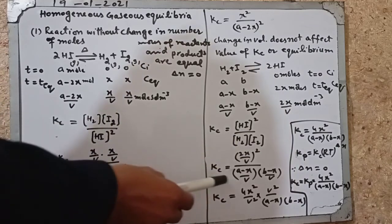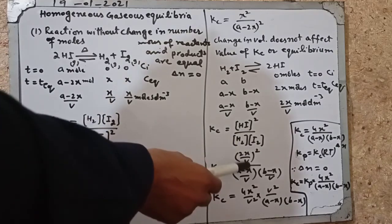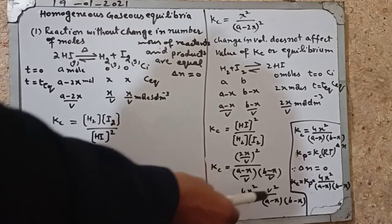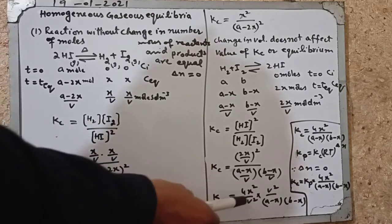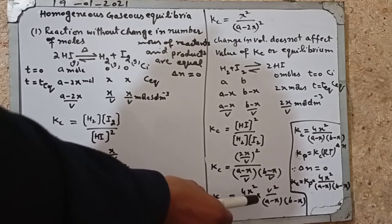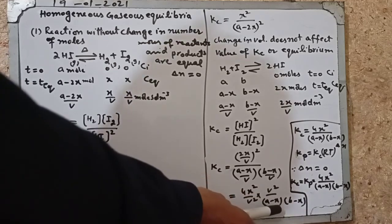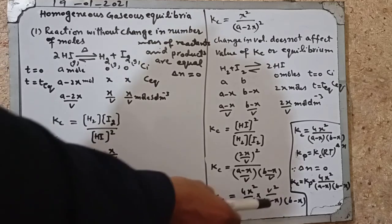Kc becomes 2x over v-square divided by a-x over v into b-x over v. Solving this, Kc is equal to 4x square over v square multiplied by v square over a-x into b-x. v square cancels.